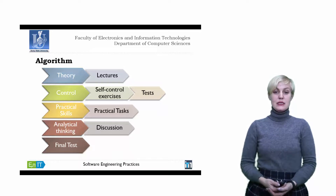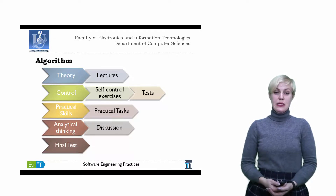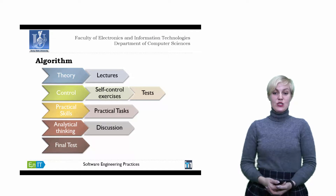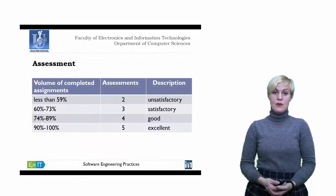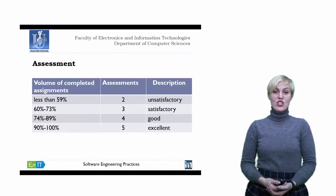Note, you should make at least 60% of the different tasks in each module to get access to the final test. The final test includes questions from the unit quizzes. For successful passing of the final exam, you must score at least 60% of points. You can get assignments according to the information shown on this slide.